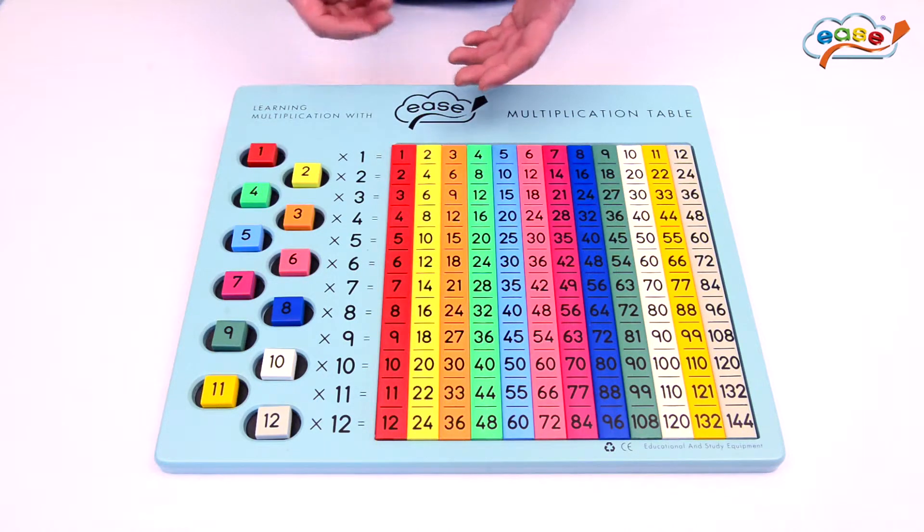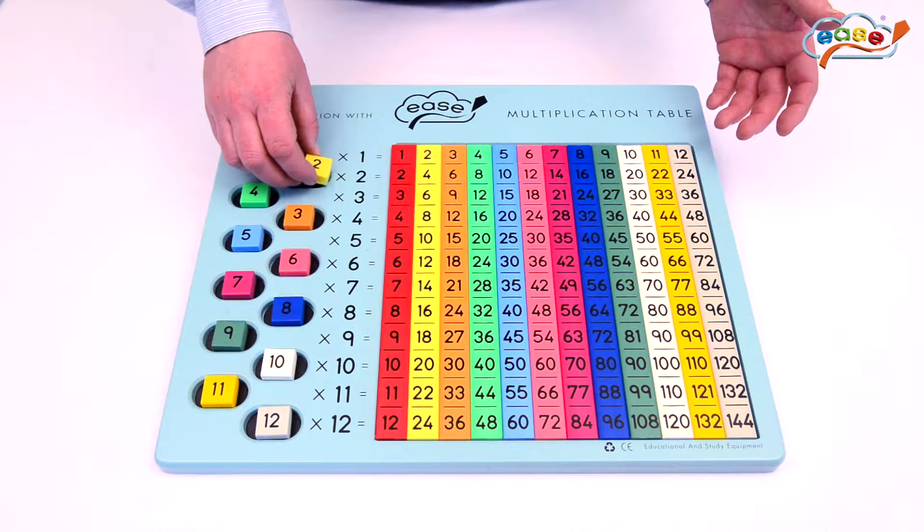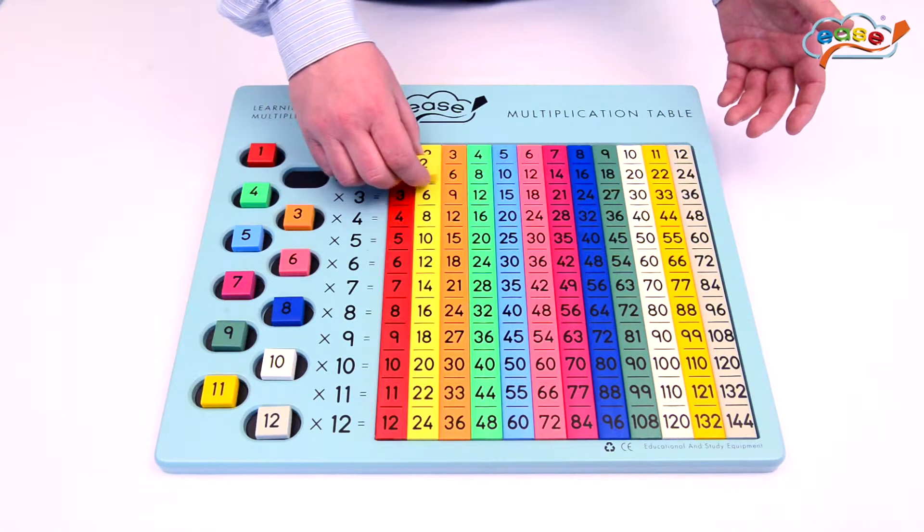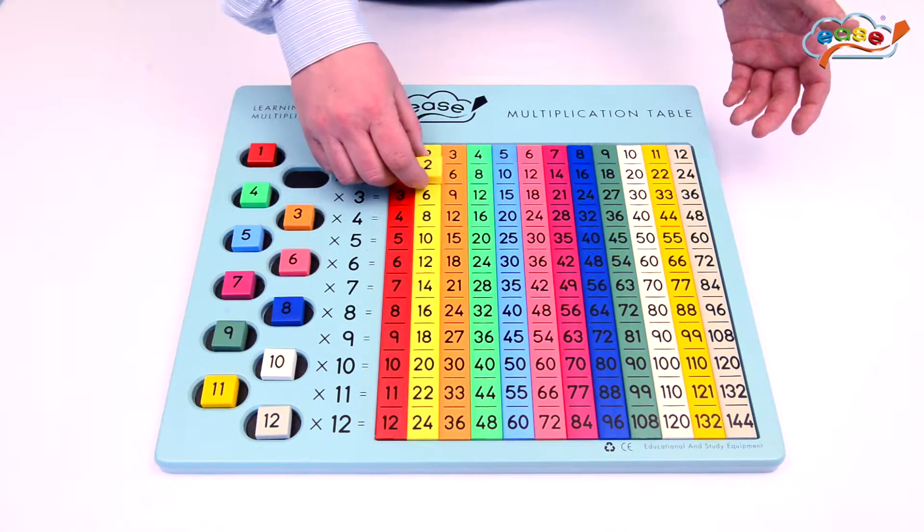Now with the board itself, initially we have multiplication by use of color. So for example, 2 2's, 1, 2, 2 2's is 4, being yellow with yellow.